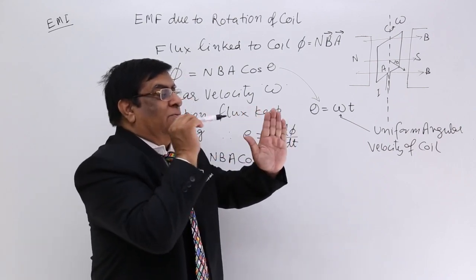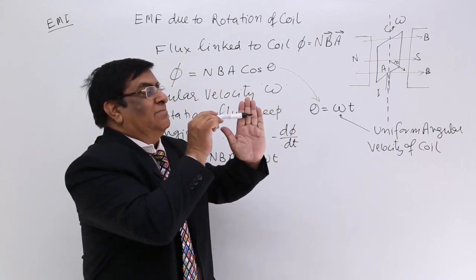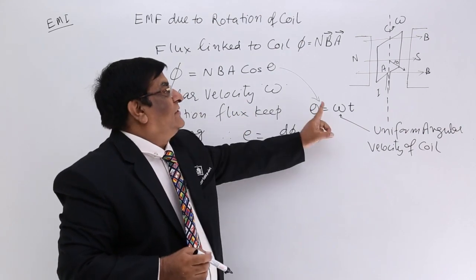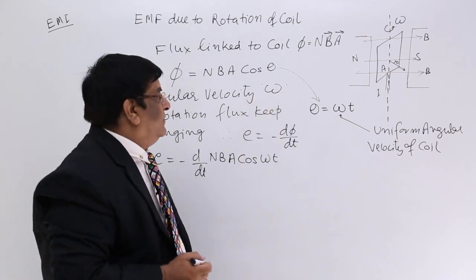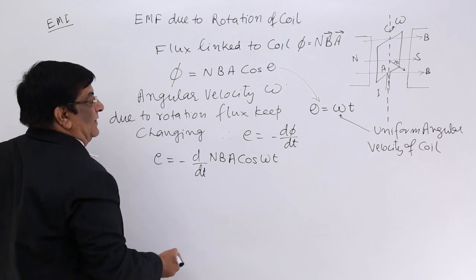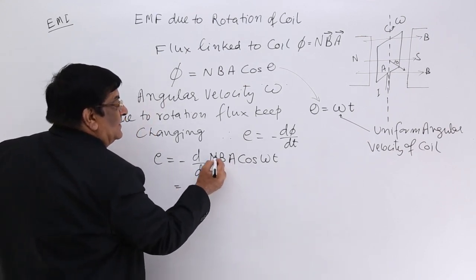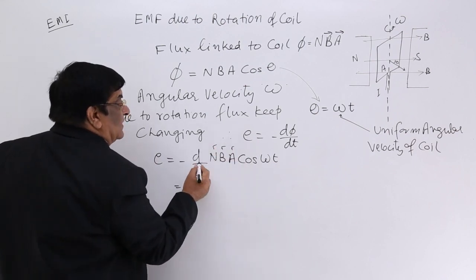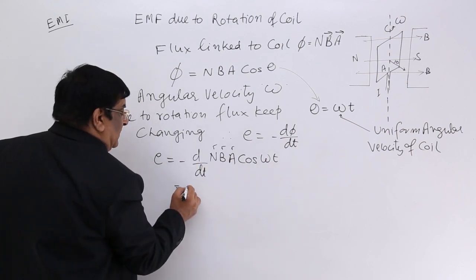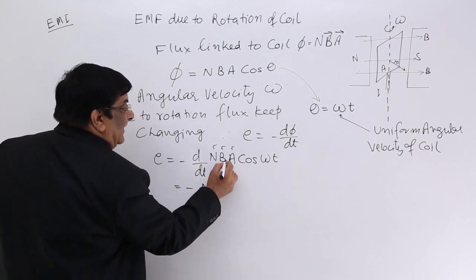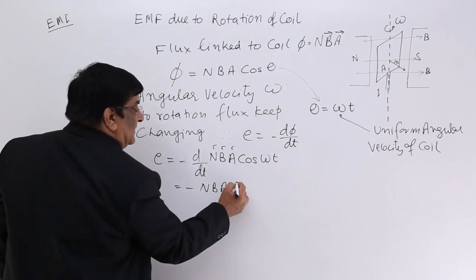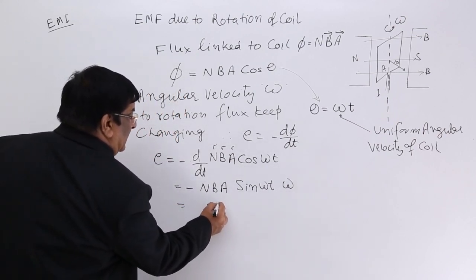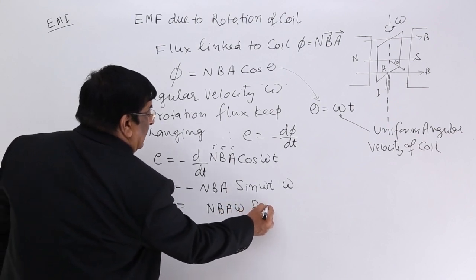At one time the value is 0 when the coil is parallel to the magnetic field, and at other times the value is full because cos theta has become 1. It is a function of time. Now if we differentiate — N constant, B constant, A constant — these quantities are not changing during rotation. So only cos omega t is the variable term. We write: minus N, B, A times the derivative of cos omega t, which gives sin omega t into omega.